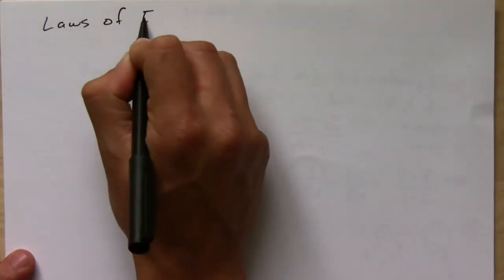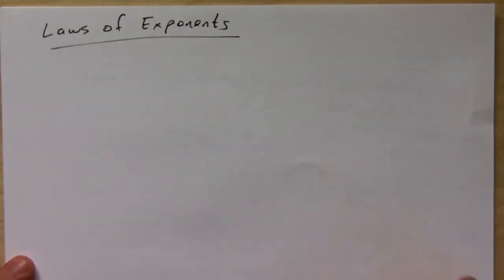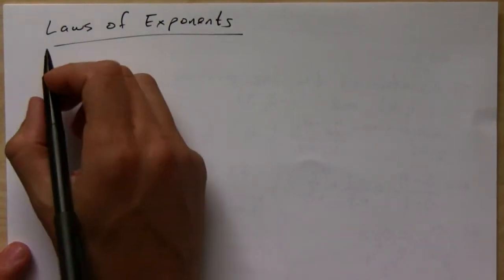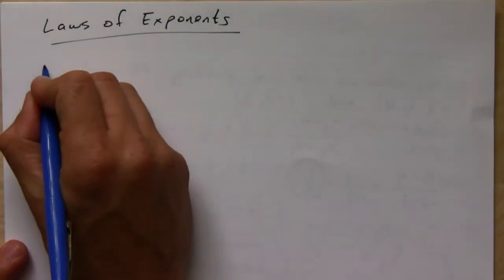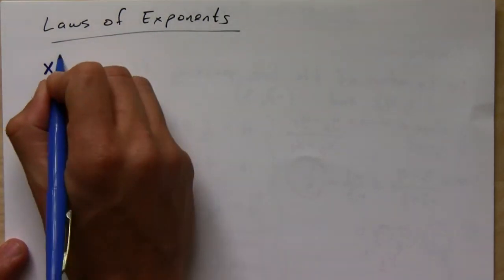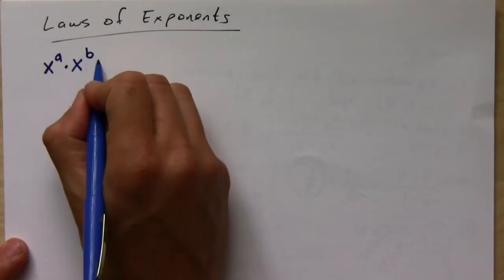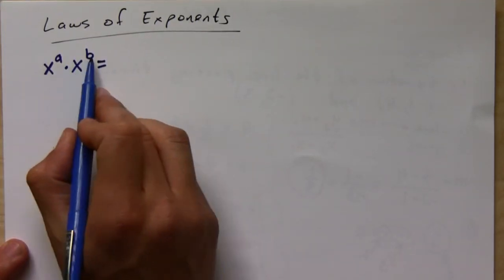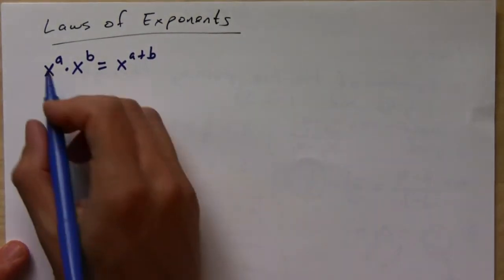Let's talk about the laws of exponents. You should all know these, but let's just do maybe a couple of quick examples. The rules: when you are multiplying two factors that are the same, what you do is you add the exponents.